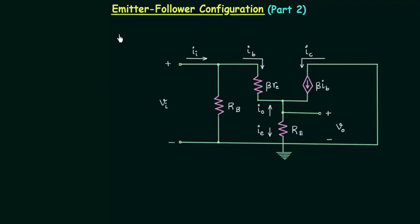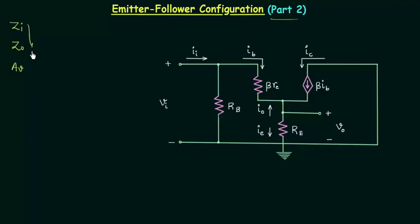In the previous lecture we completed the first part of emitter follower configuration. We saw the construction of the emitter follower circuit, discussed a few properties, and obtained the AC equivalent circuit with the RE model of transistor. In this presentation, part 2, we will calculate the input impedance ZI, the output impedance ZO, and the voltage gain AV using the AC equivalent circuit.